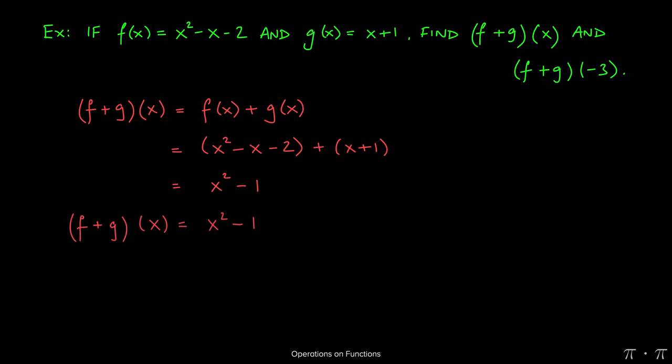So that tells us that this function we were looking for, (f + g)(x), is really just x squared minus 1. Now for the second part of the problem where we're asked to find (f + g)(-3).